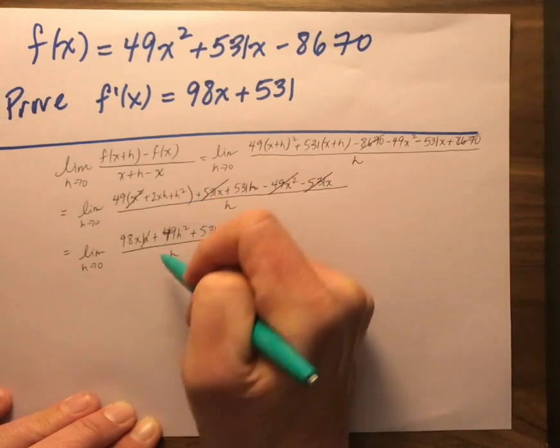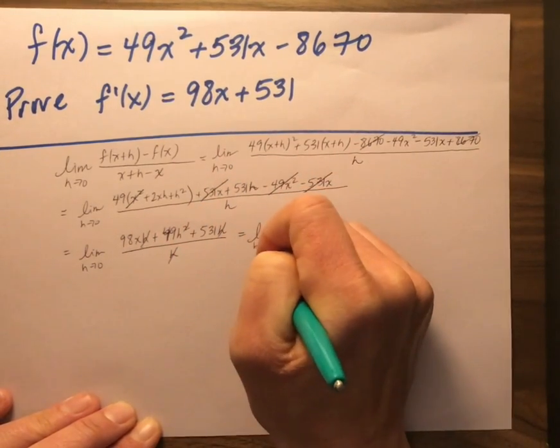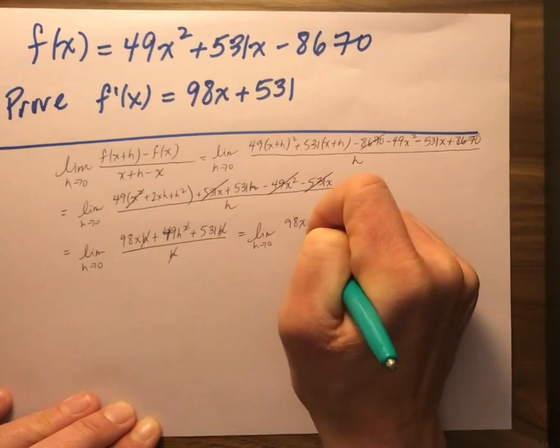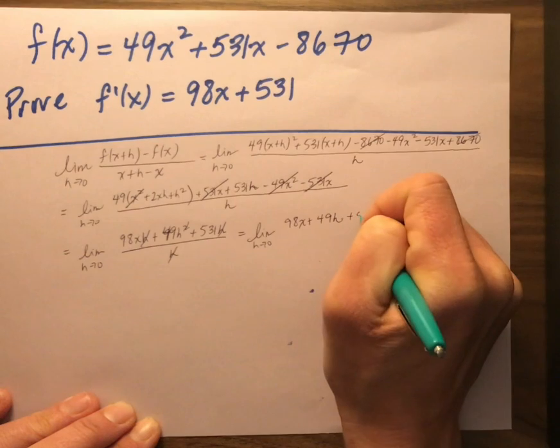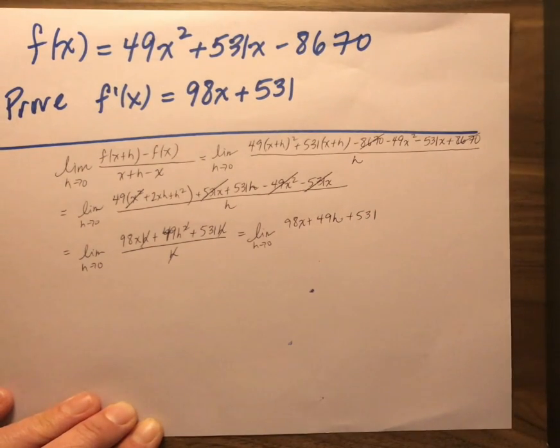But I do see I can cancel an h from everything. So I have a limit as h goes to 0 of 98x plus 49h plus 531. And now I'm at the point, if I let h be 0,